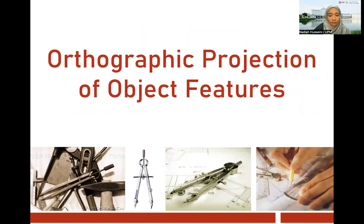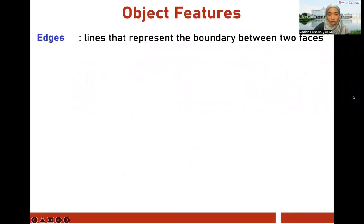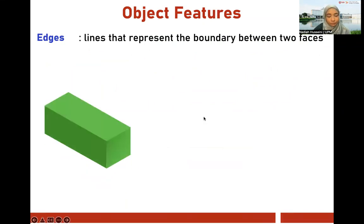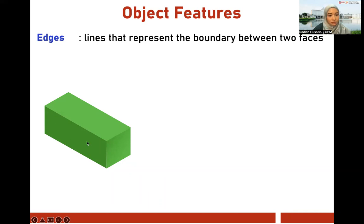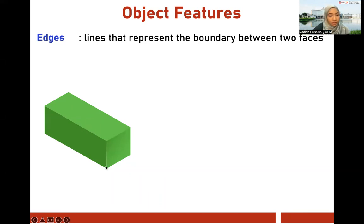Orthographic projection of object features: edges. An edge is a line that represents the boundary — sempadan — between two faces. Here I have this face and this face; the line representing the boundary between those two faces is called the edge. This face, this face, this boundary — that's your edge.